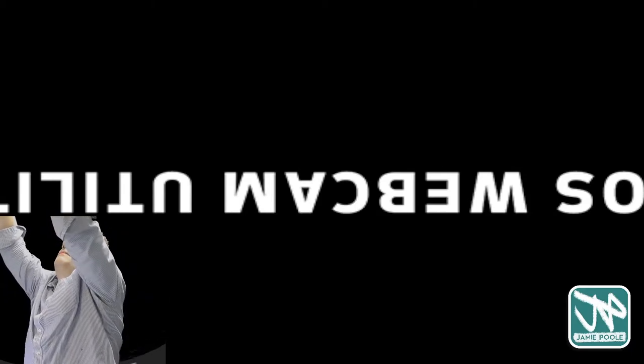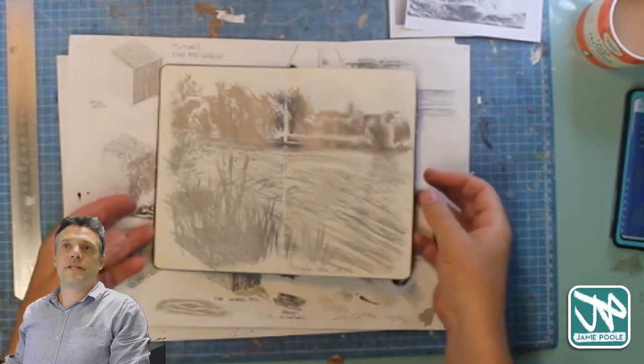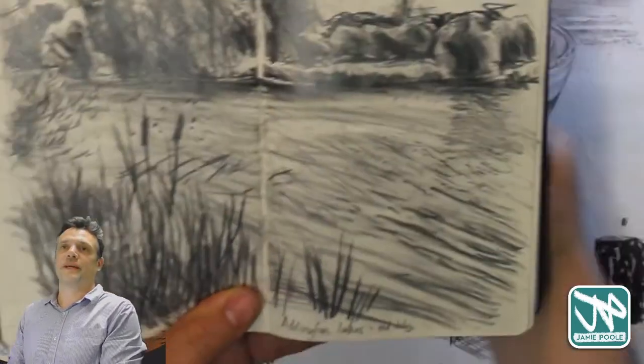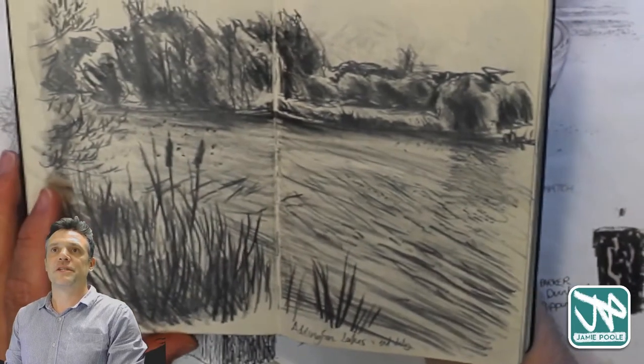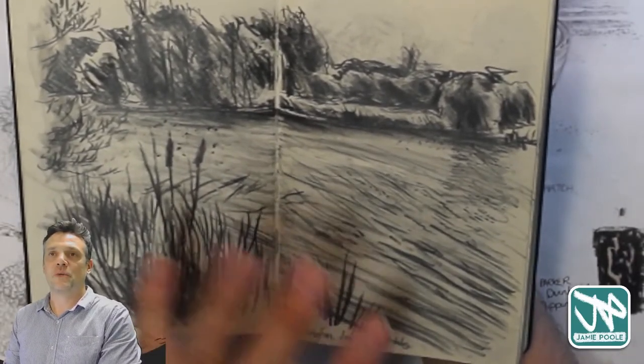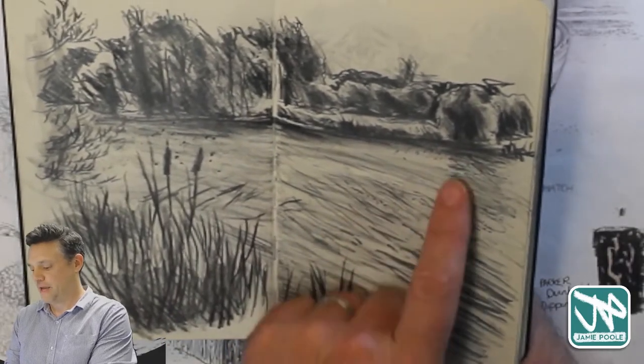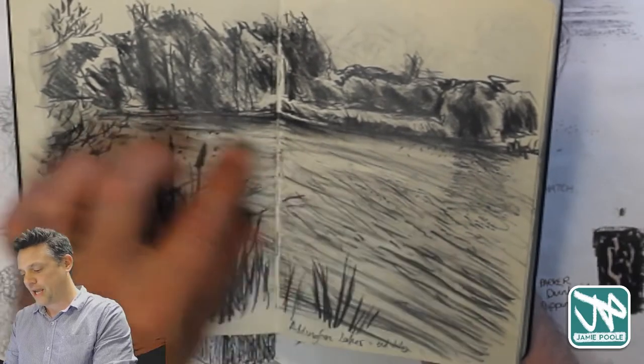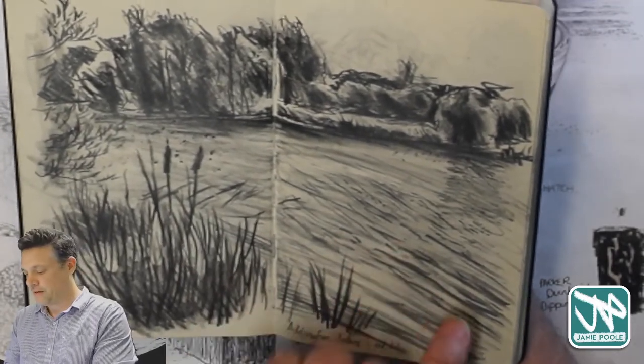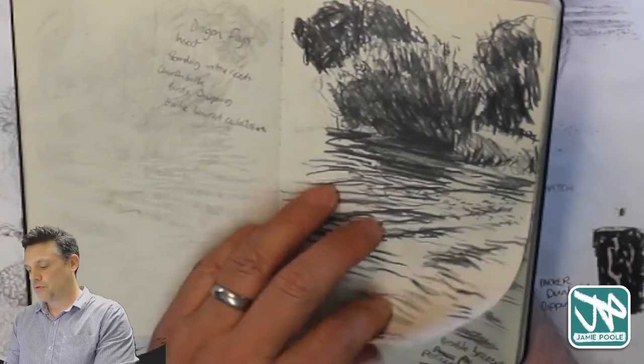This is an old sketchbook from when I was really into going out and drawing reflections in water. Often with reflections and water, because the water moves when the wind blows, you've got shadows coming off things like the trees over here. You've often got lines which indicate where the ripples of water go, with bigger, darker ones towards the foreground and little stippled, smaller ones as you go towards the back.